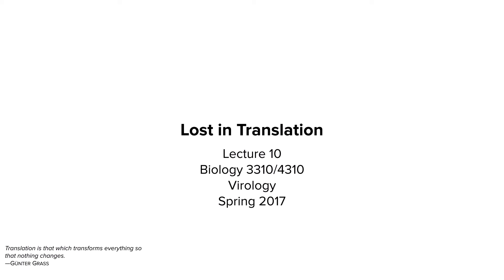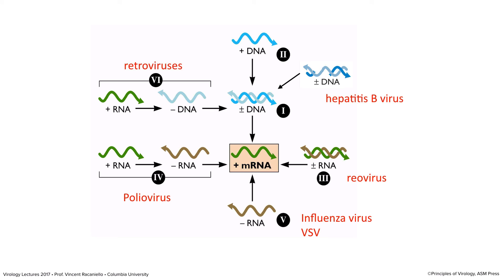Protein synthesis. Remember, this is what every virus mRNA has to be ready to do: be translated by the host cell translation machinery. In the Baltimore scheme, that molecule in the middle, mRNA, viruses have to make mRNA that can be translated by the host cell apparatus. Viruses are totally dependent on the host cell for translation. They're parasites of the translation system. They need ribosomes, tRNAs, all the factors provided by the host cell.